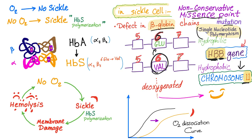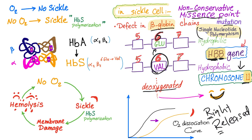When there is deoxygenation, the cells sickle. Looking at the oxygen dissociation curve, anything that shifts the curve to the right — meaning oxygen is being released — will lead to less oxygen and therefore sickling. Repeated sickling due to HbS polymerization will lead to membrane damage of the red blood cell, which leads to hemolysis. Hemolysis leads to less oxygen, because the red blood cells carry oxygen — when there are no red blood cells, there is no oxygen — and therefore it becomes a cycle.